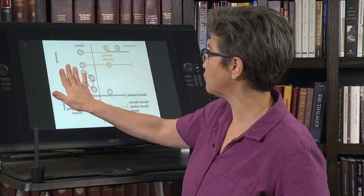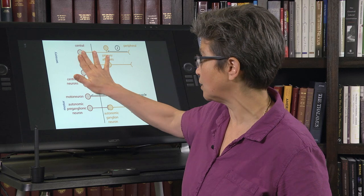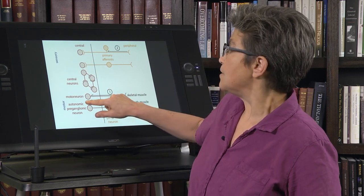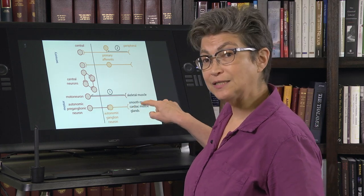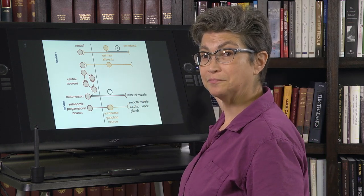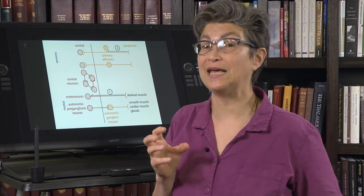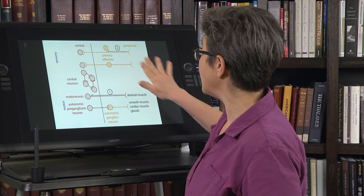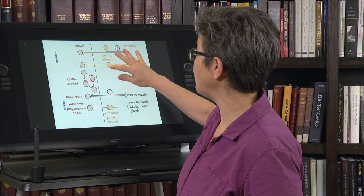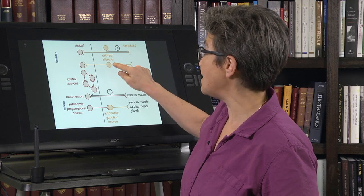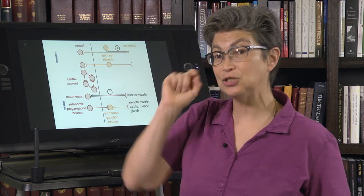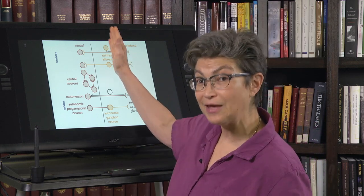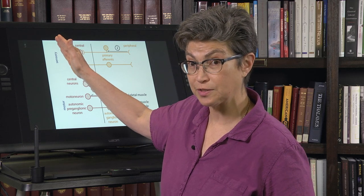In the case of some central neurons — motor neurons and autonomic preganglionic neurons — these neurons send a process into the periphery. So they're not wholly contained within the central nervous system, but they have a cell body in the central nervous system. In the case of the primary sensory neurons, they send a process into the central nervous system, so even though they're peripheral neurons, they also contact the central nervous system.